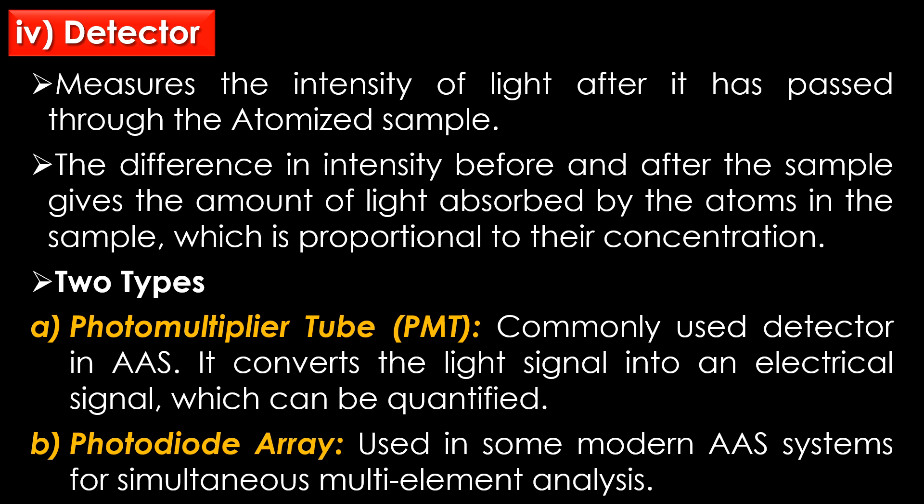The fourth part is the detector, which measures the intensity of light after it has passed through the atomized sample. The difference in intensity before and after the sample gives the amount of light absorbed by the atoms, which is proportional to their concentration. There are two types of detectors: the photomultiplier tube and the photodiode array. The photomultiplier tube is the most commonly used detector; it converts the light signal into an electrical signal which can be quantified. The photodiode array is used in some modern AAS systems for simultaneous multi-elemental analysis.